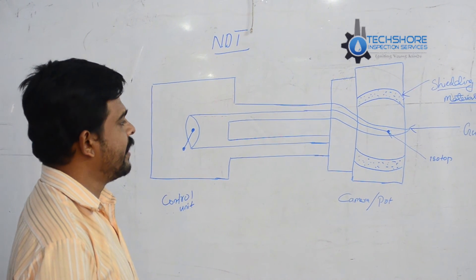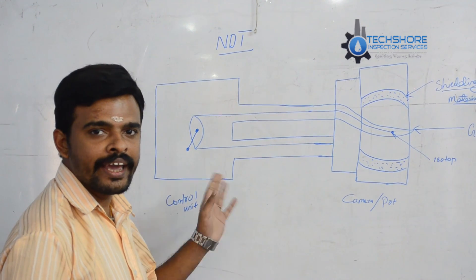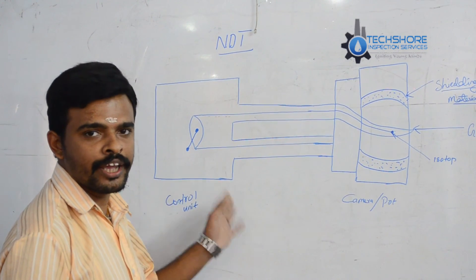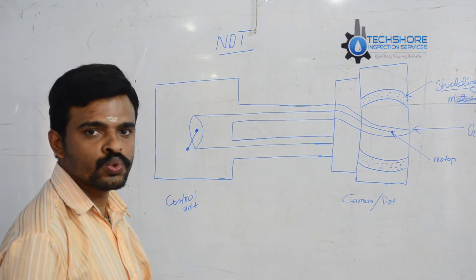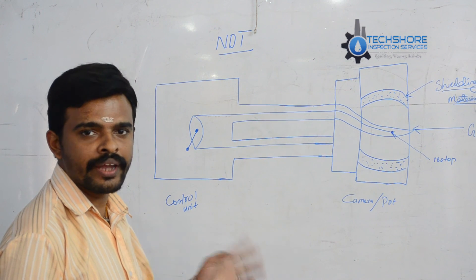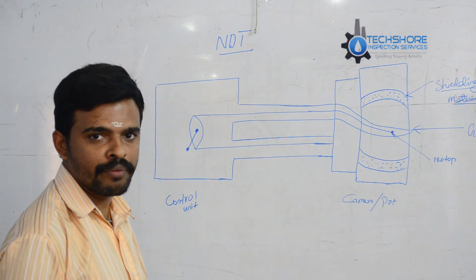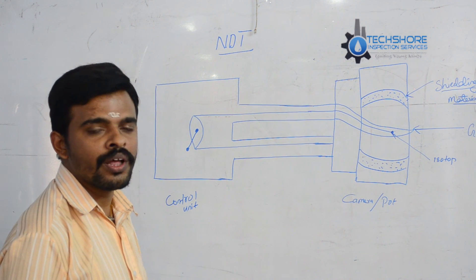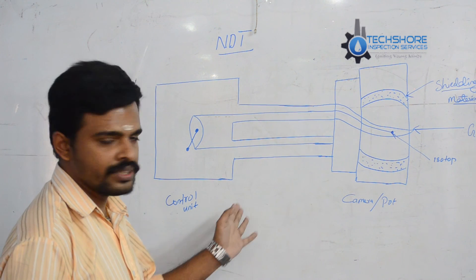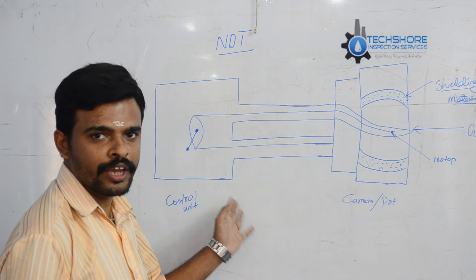This is mainly a gamma ray equipment. There are two types of equipment: X-rays and gamma rays. This one is a gamma ray equipment.